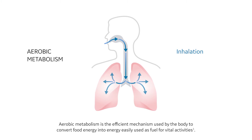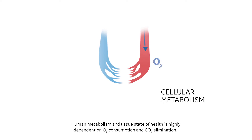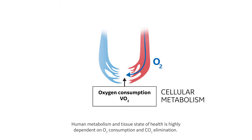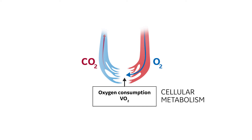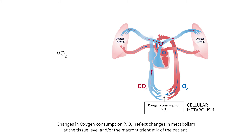Aerobic metabolism is the efficient mechanism used by the body to convert food energy into energy easily used as fuel for vital activities. Human metabolism and tissue state of health is highly dependent on O2 consumption and CO2 elimination. Changes in oxygen consumption, VO2, reflect changes in metabolism at the tissue level and/or the macronutrient mix of the patient.